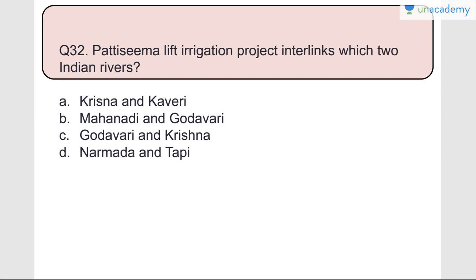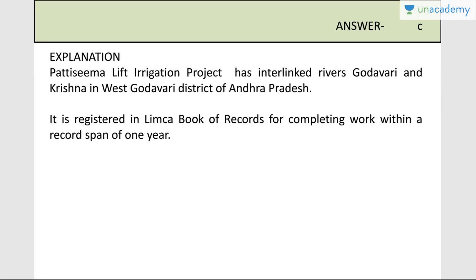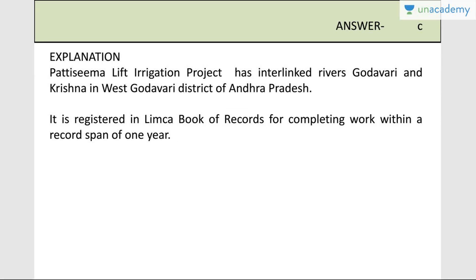Question number thirty-two: The Pattiseema Lift Irrigation Project interlinks which two Indian rivers? It interlinks the Godavari and Krishna rivers in West Godavari district of Andhra Pradesh. Answer is C. It is registered in the Limca Book of Records for completing work within a record span of one year.